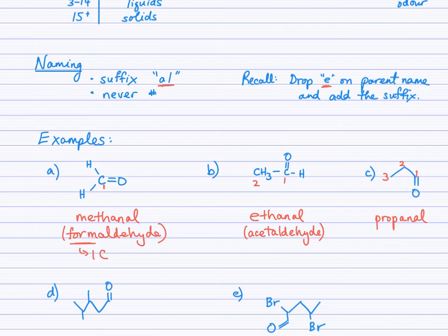For part B, we see two carbons, ethane, drop the e, ethanal. The common name here is acetaldehyde. You may have heard of acetic acid, an organic acid that has two carbons. So acet typically means two carbons. I numbered the carbons from right to left for example C, because the functional group, the formyl group, needs to have the lowest possible number. Propane, drop the e, propanal.